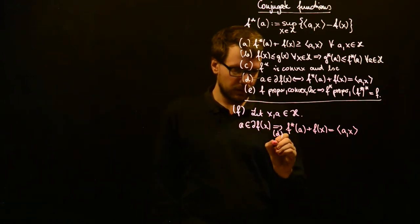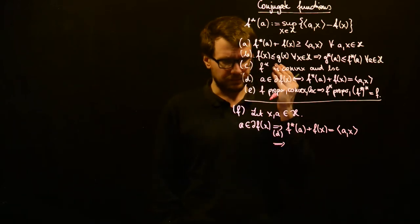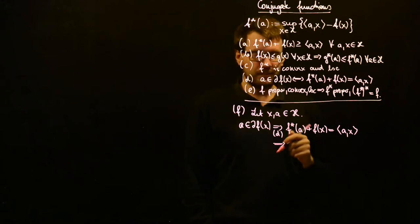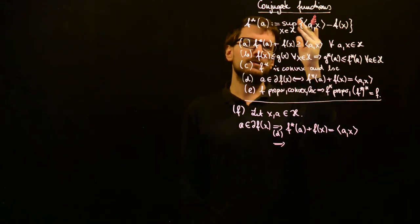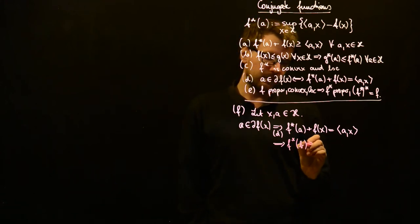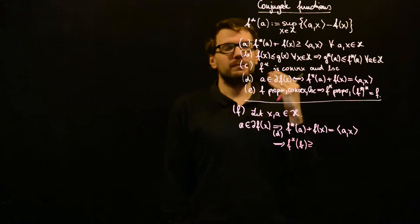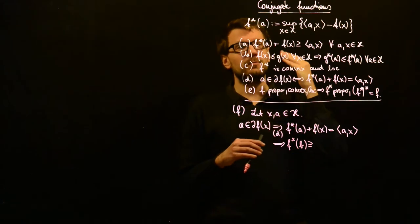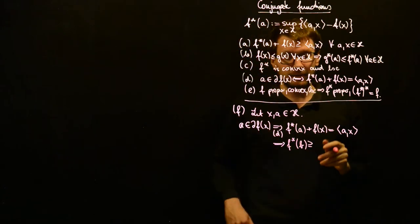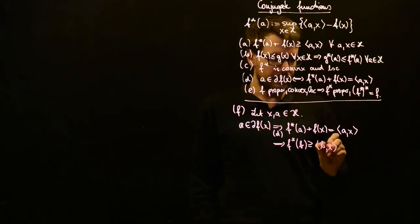Now we can write f-star at any other point just with the help of this supremum. Therefore, f-star of any other point b is greater or equal than when we take this inside the supremum and evaluate it at just some point without caring if the supremum is attained. Since f-star of b is the supremum over these expressions, we will certainly be greater or equal, so f-star of b is greater or equal than the inner product b·x minus f of x.